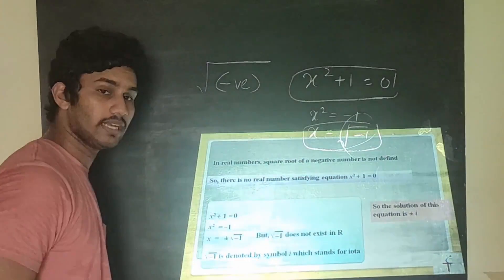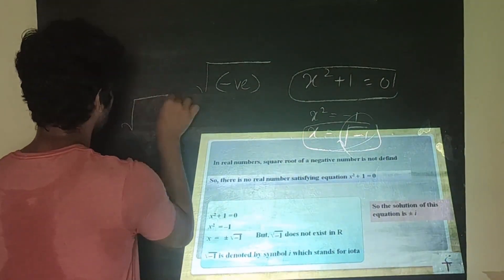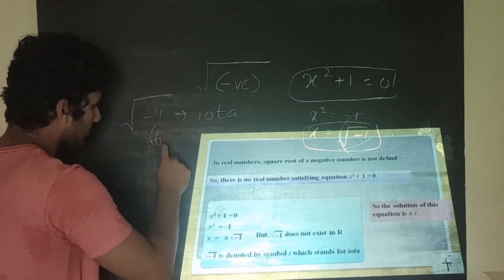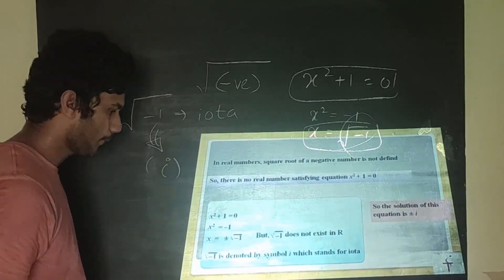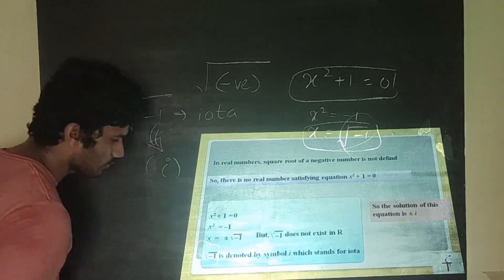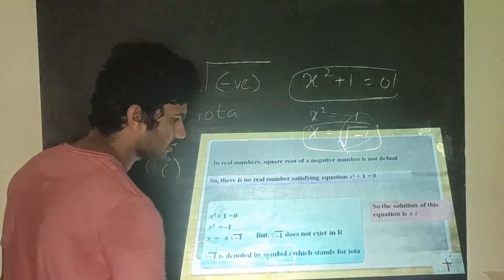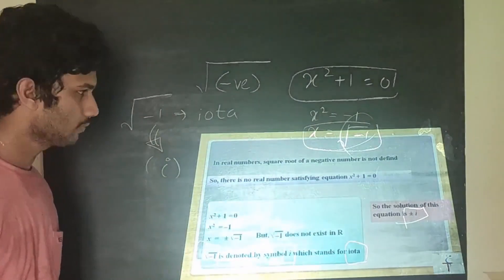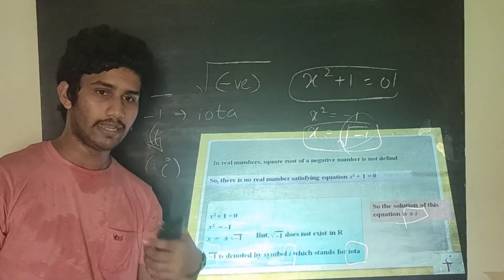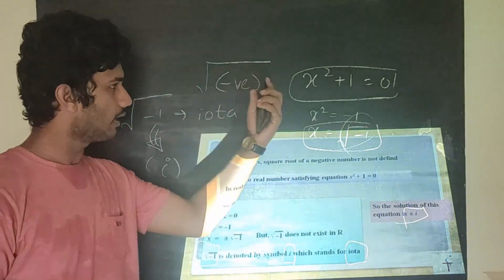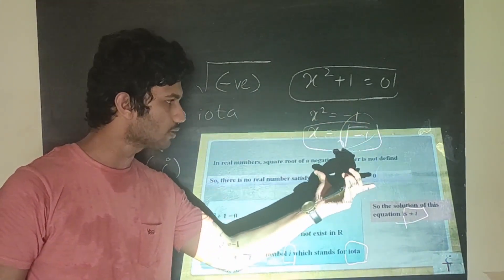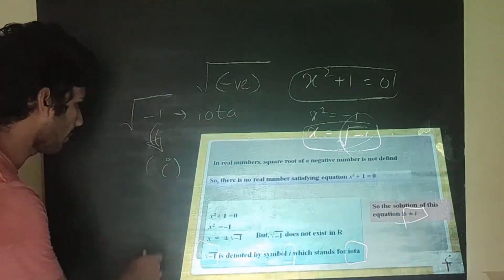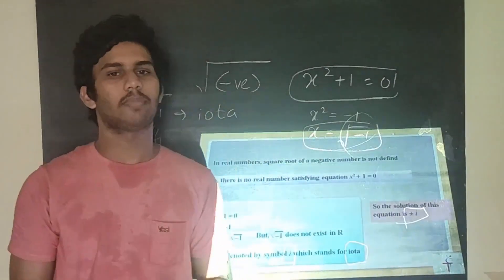This √(−1) is called iota, represented by the small letter i. So √(−1) is denoted by the symbol i, called iota. The solution of x² + 1 = 0 comes to be ±i. When you take a square root there are two possibilities — positive or negative — so there are no real roots, only complex roots, and those complex roots are ±√(−1) = ±i.